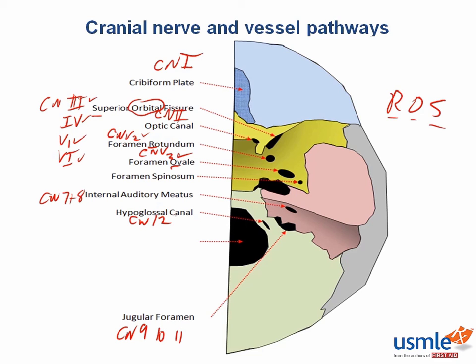Last, but far from least, is the foramen magnum, which is the exit point for the brain stem, the vertebral arteries, and the spinal roots of cranial nerve 11.